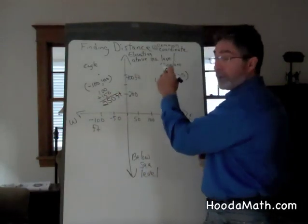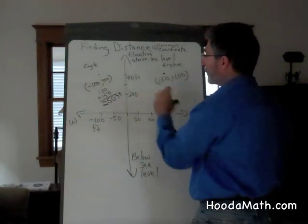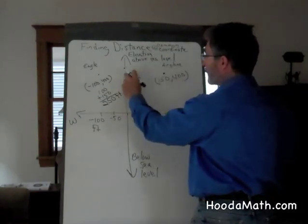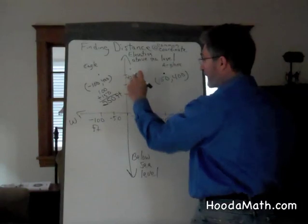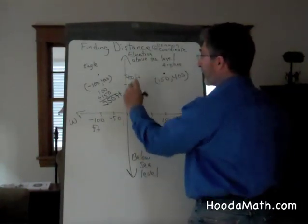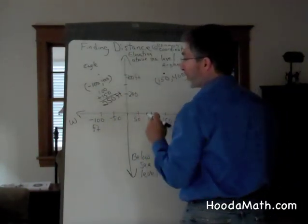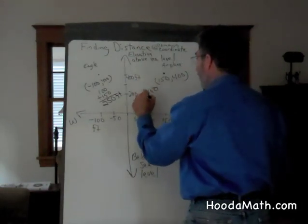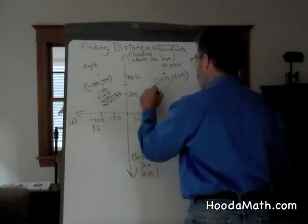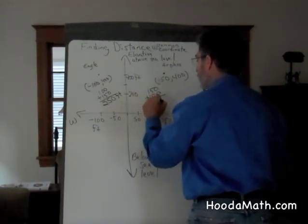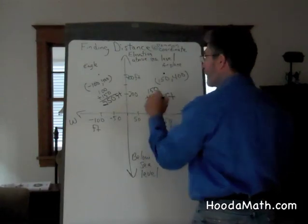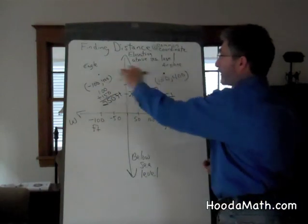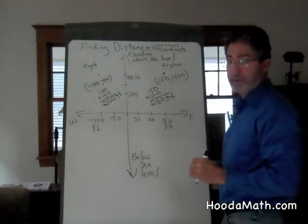If we travel from the airplane to the eagle, we would travel 150 feet west, and now we're directly above the airport, and another 100 feet west to the eagle. So 150 plus 100 would be 250 feet. It doesn't matter if you travel from the eagle to the airplane or from the airplane to the eagle — the distance is the same.